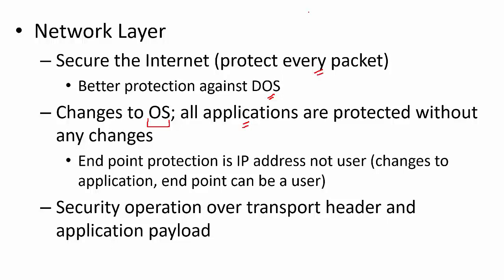One big advantage of network layer security is that all applications are protected without any changes. Earlier you had to insist that an application use SSL or TLS which comes with TCP. But if there was an application that wants to use UDP, it doesn't have much of a choice — it has to implement the security functionality as part of the application itself. Whereas when you do network layer security, you don't have to change the applications. Whatever packets they are generating, when they come to the network layer, they are protected.